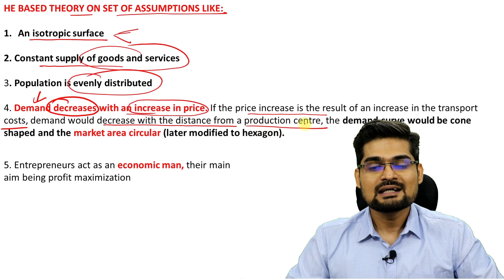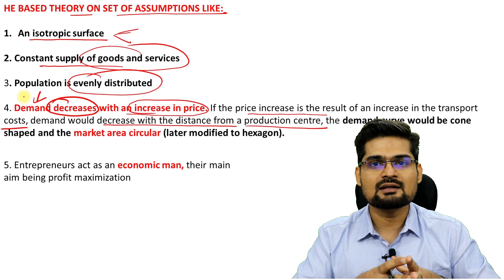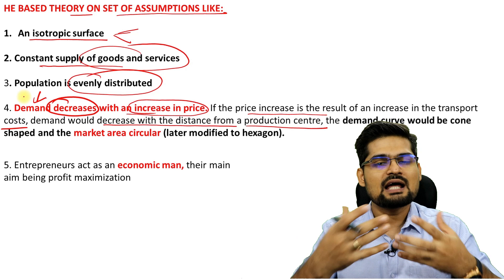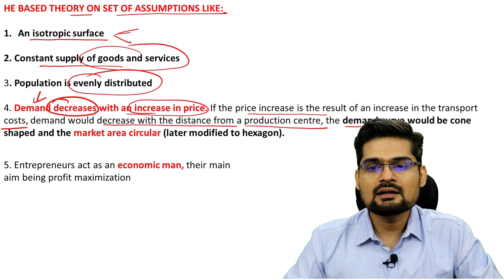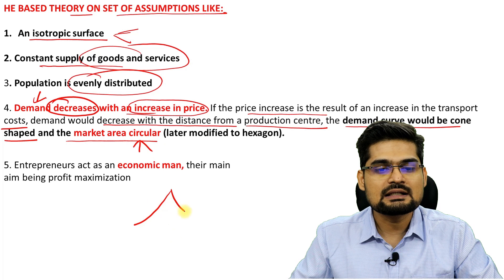Demand decreases as you go away from the production center because at the production center, transportation cost is not added — you only pay the production cost. But as you go further away, you must also pay transportation cost for the same product. So the demand curve would be cone-shaped and the market area would be circular, with the center at the market point.